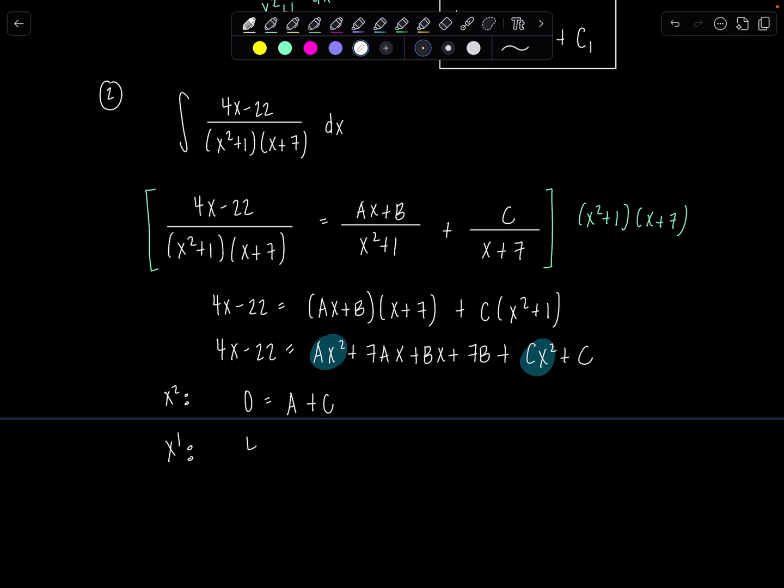Moving down the line, x to the first, I have 4x to the first on the left, and I have 7ax plus bx on the right, so 4 must equal 7a plus b. And then x to the 0, my constant term, we have negative 22, which must equal 7b plus c. Perfect.